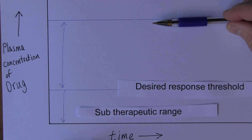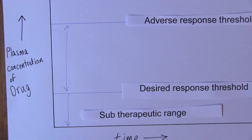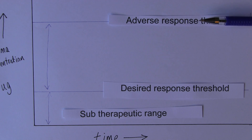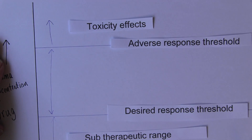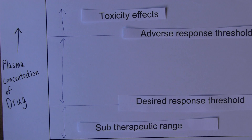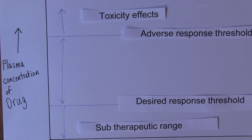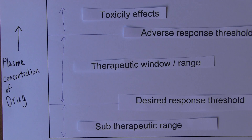If we give more and more of the drug, there will come a point where the plasma concentration is so high that above it we will get toxic effects through overdose — that line is the adverse response threshold. So not enough is sub-therapeutic, we need to reach the desired response threshold, but with any drug — and more readily with some drugs — we'll eventually reach the adverse response threshold. Above that, there will be toxicity effects because the plasma concentration of the drug has become too high.